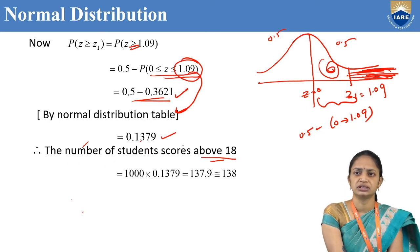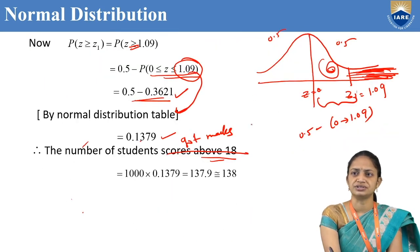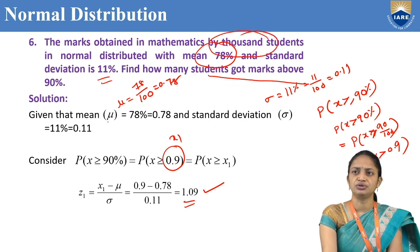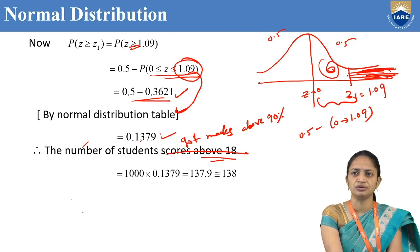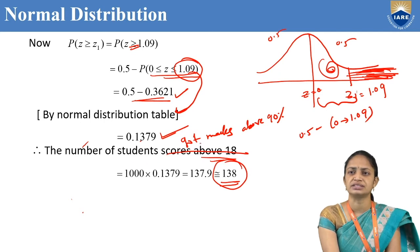Therefore, the number of students who got marks above 90% is 1000 into 0.1379, which equals 137.9, approximately 138 students.